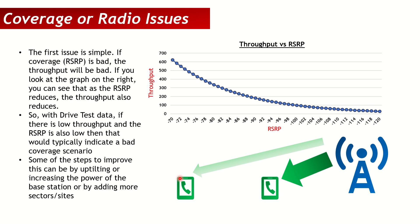So if you have a drive test log file and are facing low throughput issues, first verify your RSRP in that area. If your RSRP is also low, that indicates a typical coverage problem. You can up-tilt your antenna to increase coverage, increase the power, or if neither is possible, consider adding another site. If it's a null between two sectors, you can think about adding a sector.